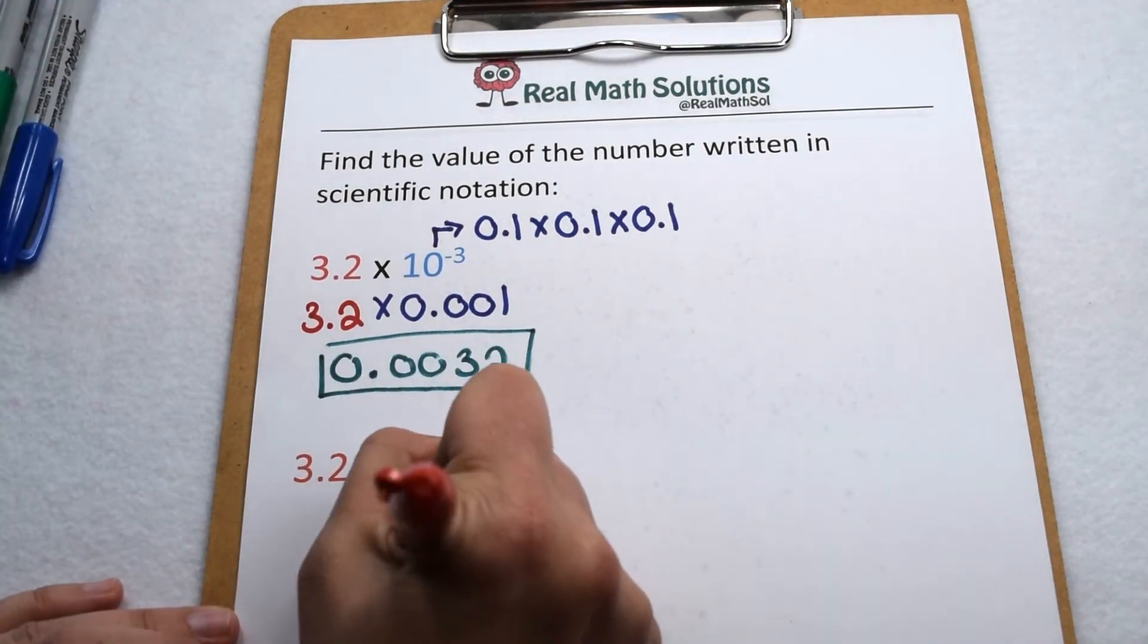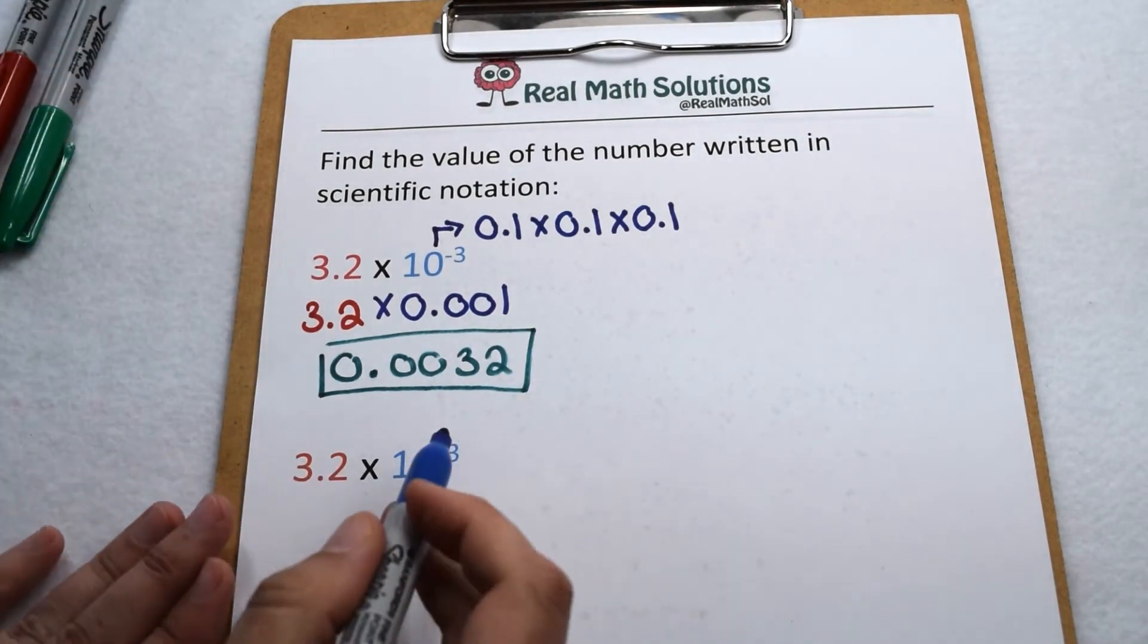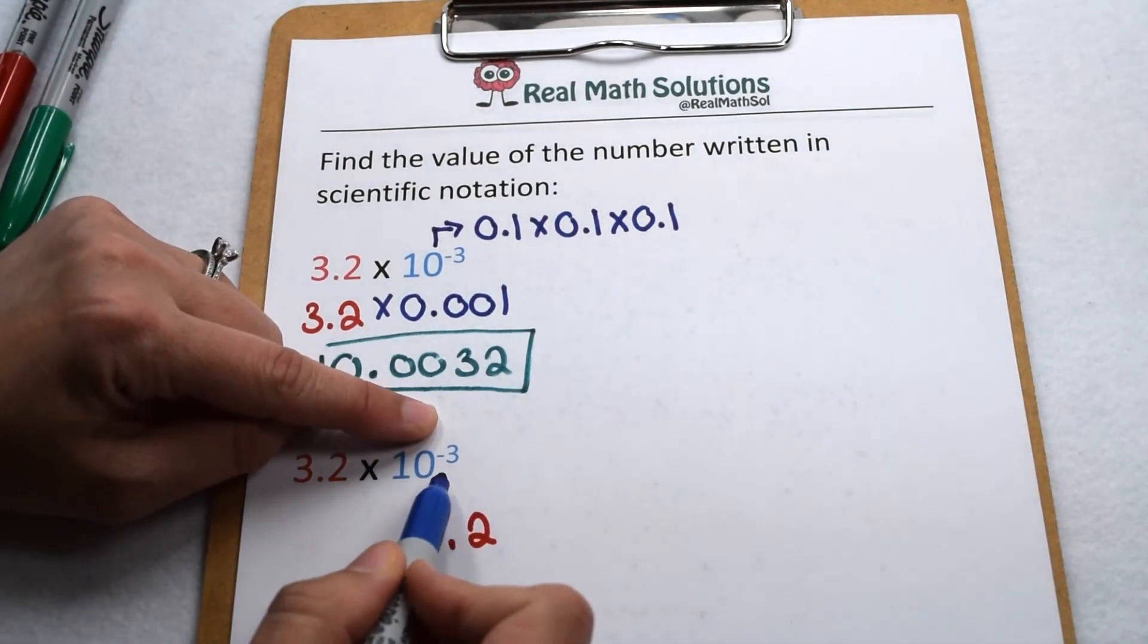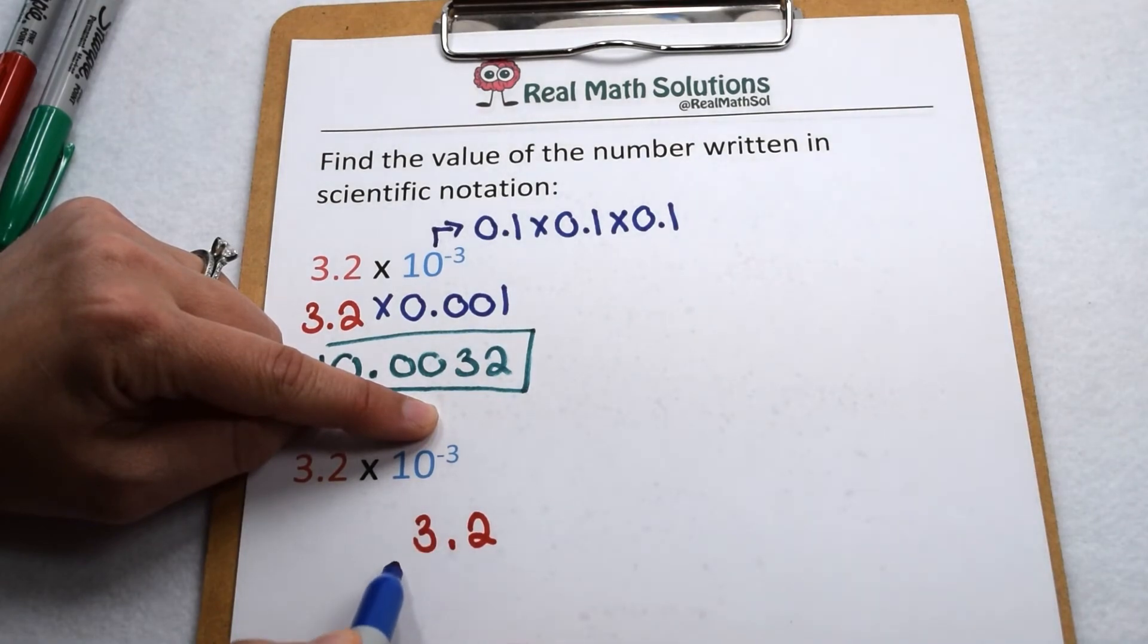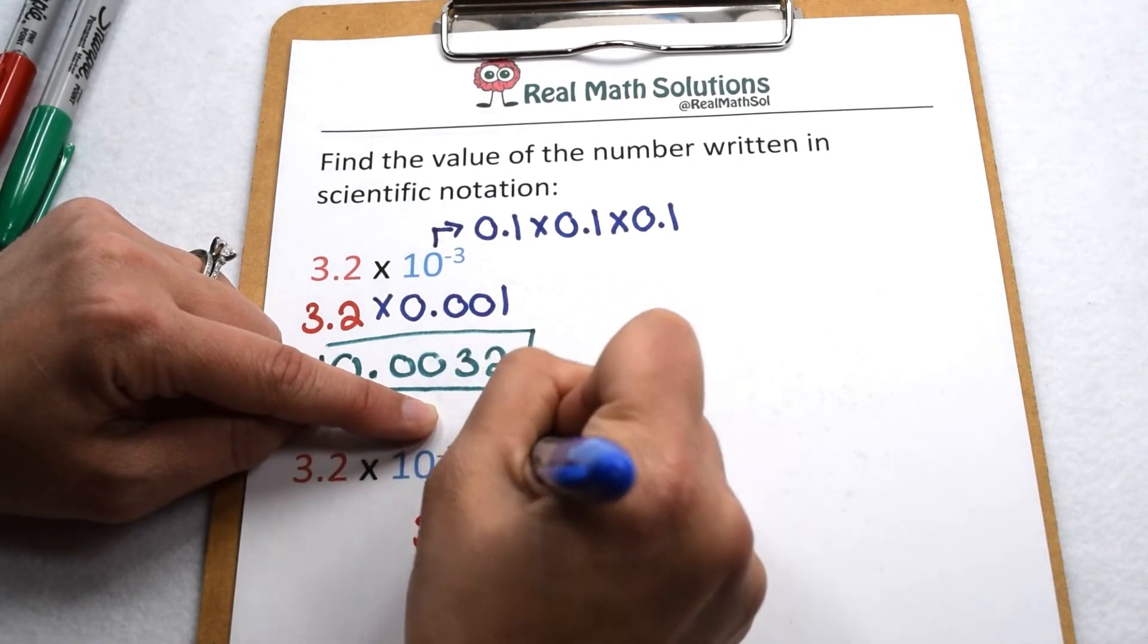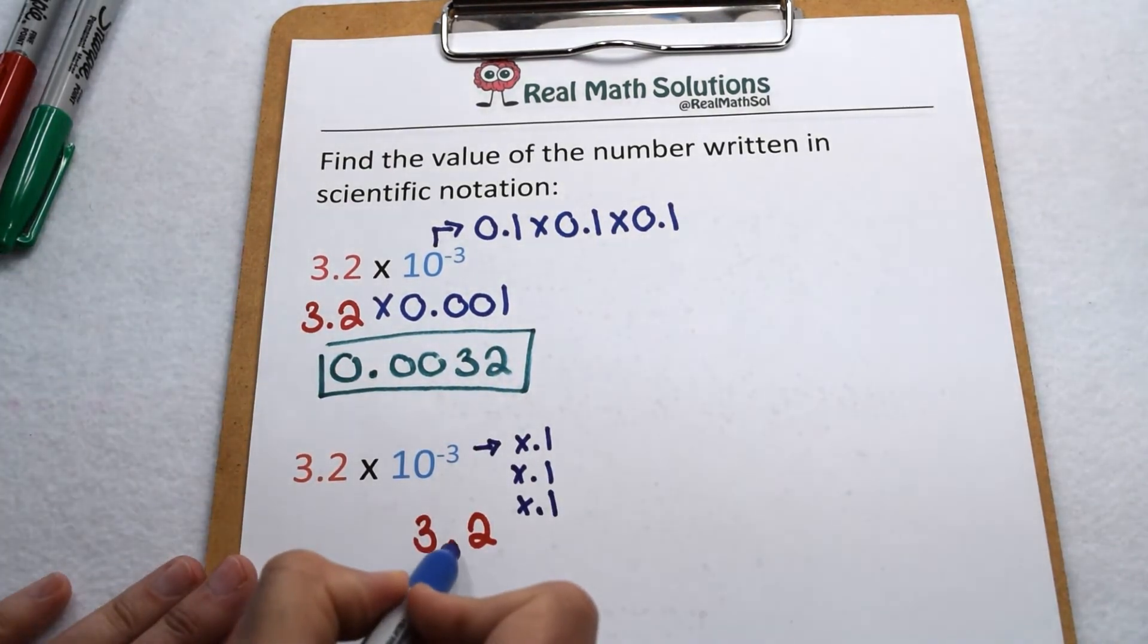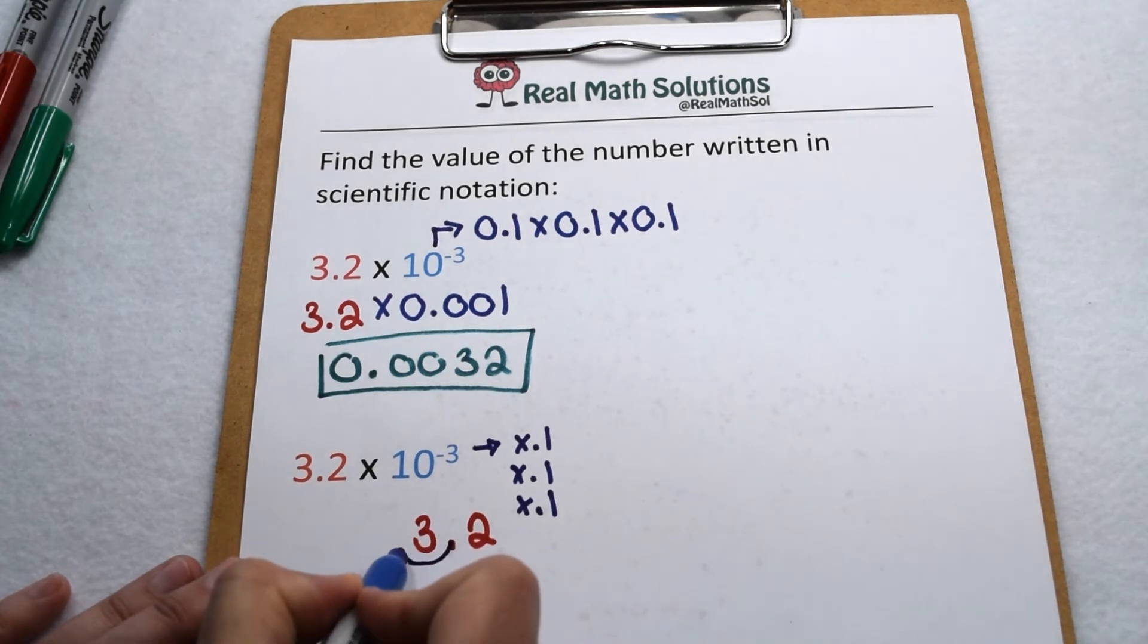The other way we could approach this is to think about what exponents do to place value. Here we have 10 to the negative third power. We said that each place value represents 1 tenth. So 10 to the negative third power would represent 1 tenth, 1 tenth, 1 tenth.